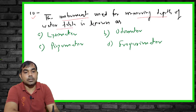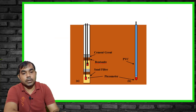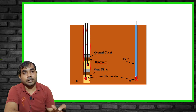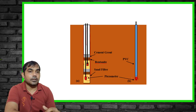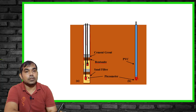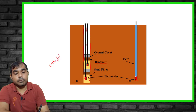The tenth question: the instrument used for measuring the depth of the water table is known as what? Lysimeter, odometer, and evaporimeter are all wrong. The right answer is piezometer. You install the piezometer into the ground with its tip, and it allows you to measure the water table depth. Always remember: piezometer is used for water table depth measurement.